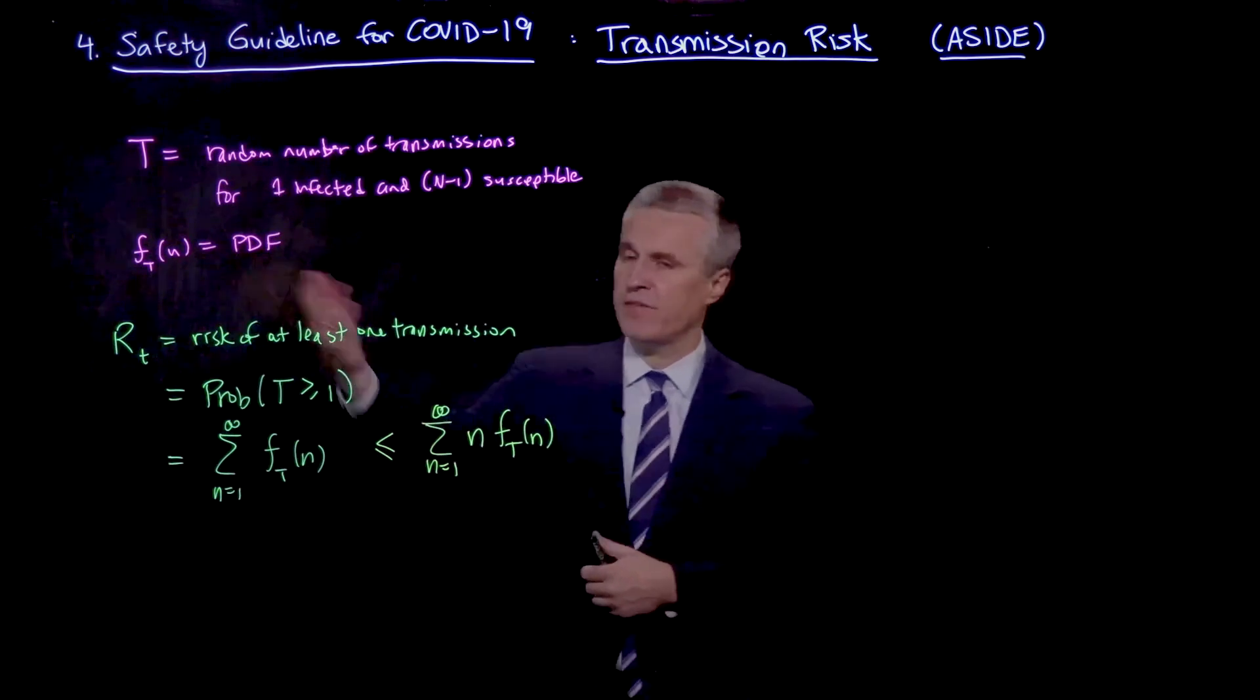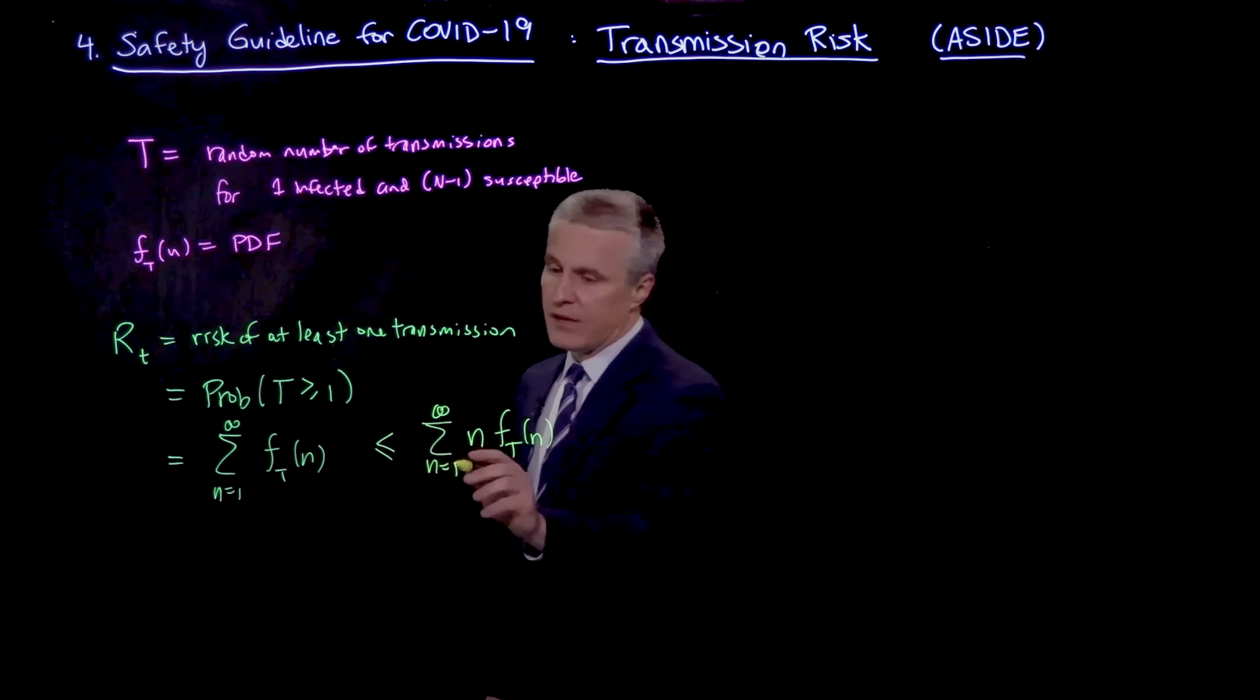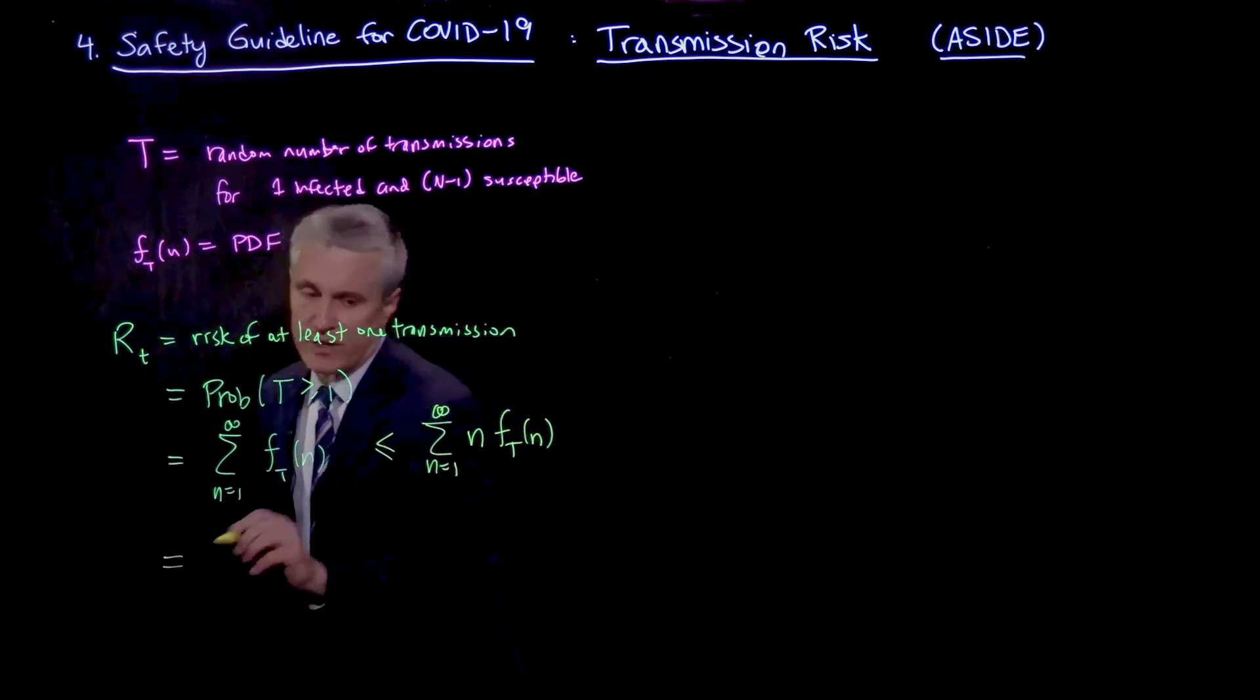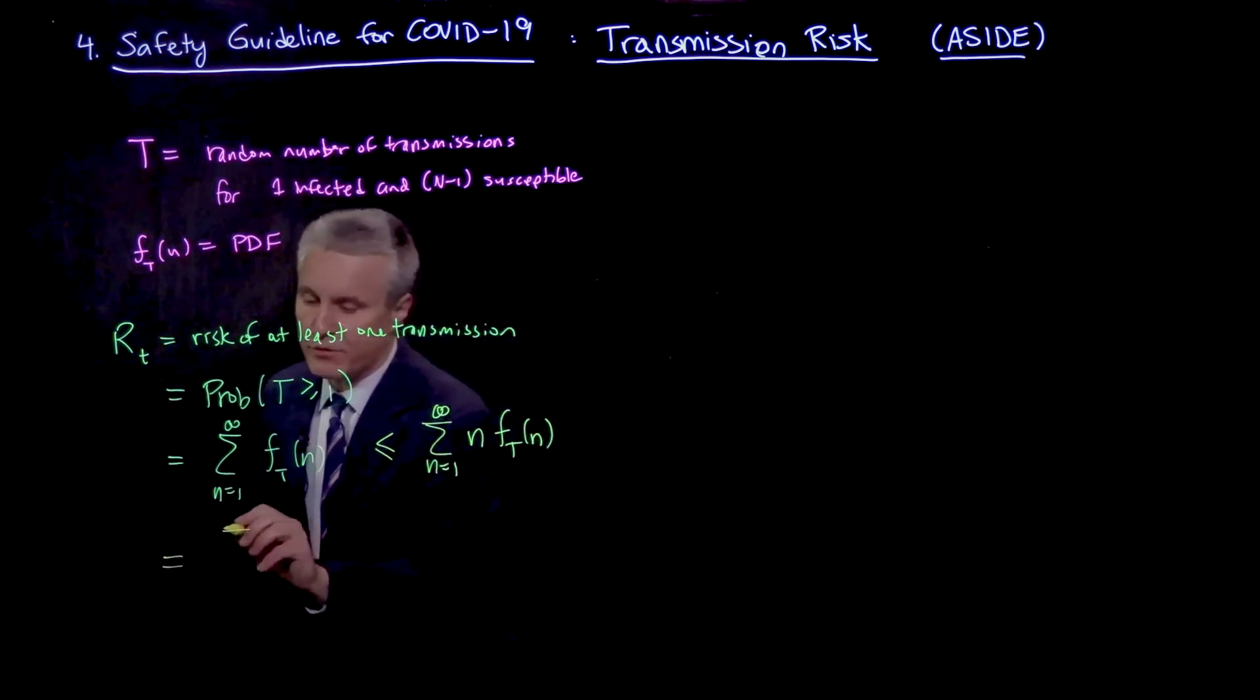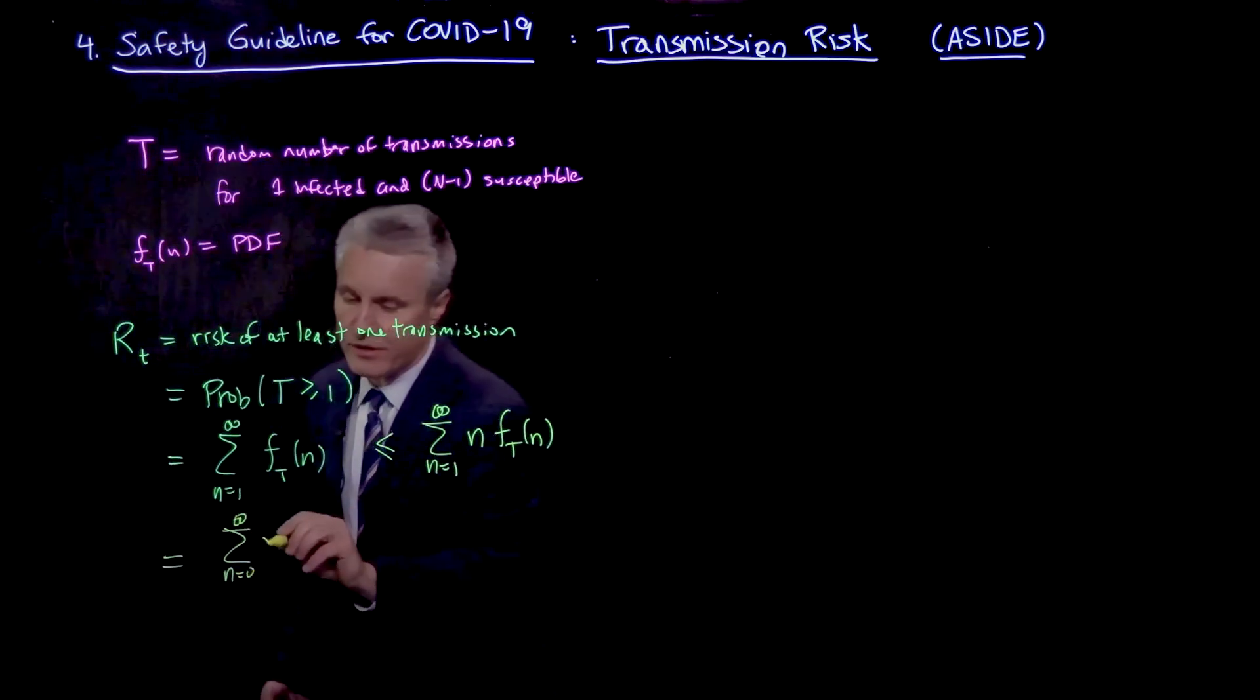Because also, this f_t is a probability density that has to be positive. And then now I can also say that this is actually equal to throwing in n equals 0, because that is a term that is actually identically 0. So I can change the summation.